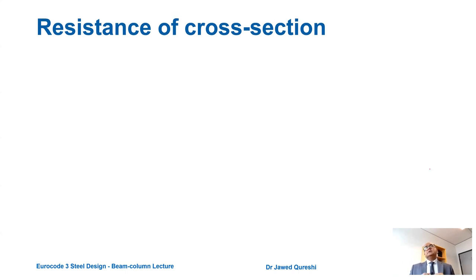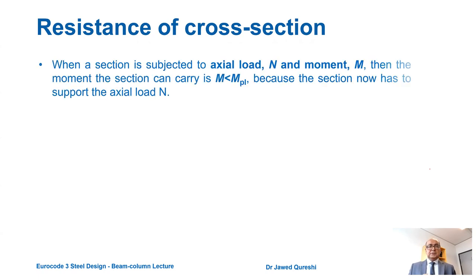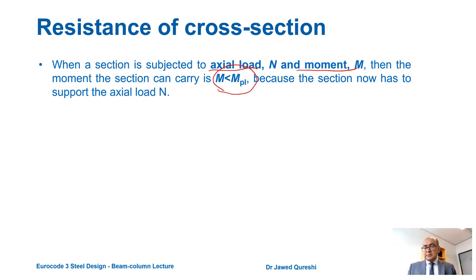The plastic neutral axis bisects the section into two equal areas under axial load alone. When moment is applied in addition to axial load, the plastic neutral axis no longer bisects the section into two equal areas, and the moment capacity of the section is reduced. The section now has to support both the axial load and the moment, so the moment capacity is less than the full plastic capacity.